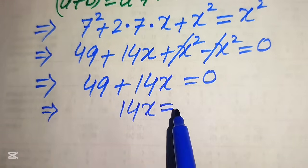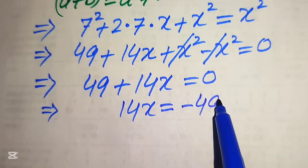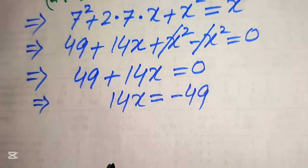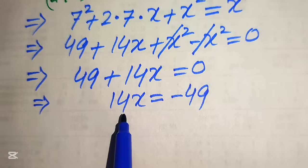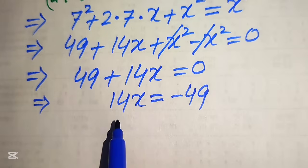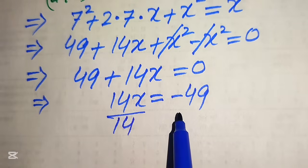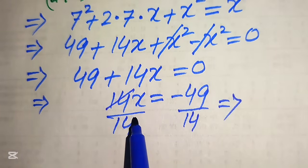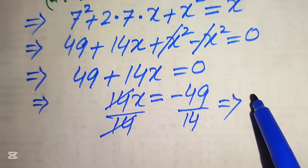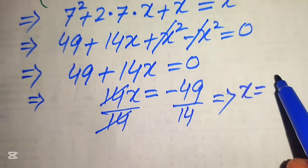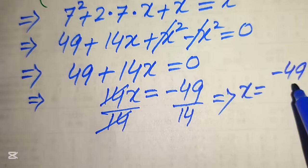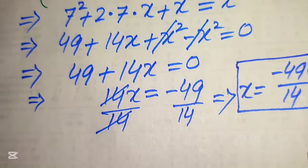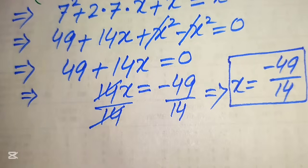From 49 + 14x = 0, we move 49 to the right-hand side to get 14x = −49. We then divide both sides by 14, and the 14 cancels on the left, giving x = −49/14. This is the value of x from method one.